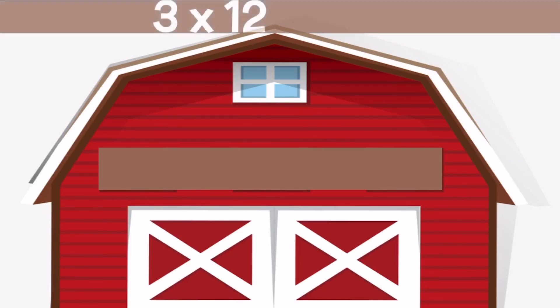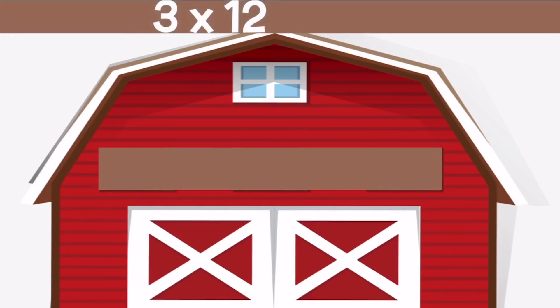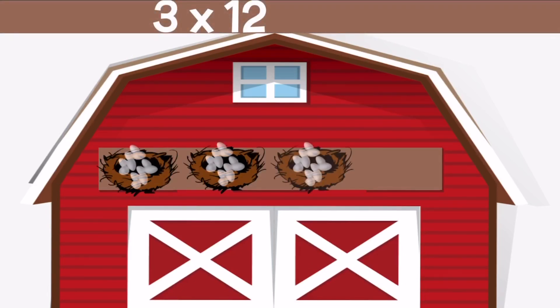3 times 12 means we have three nests with 12 eggs in each nest. If we count them all up we get 36. 3 times 12 equals 36.